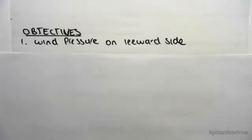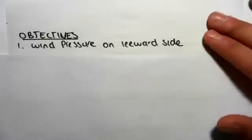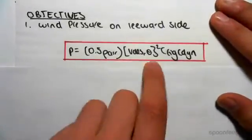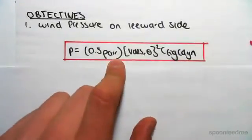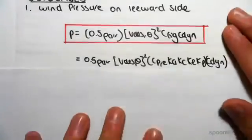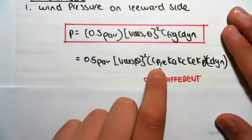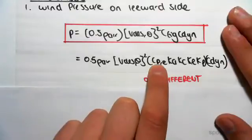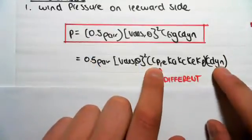Hey guys, the objective of this video is to find the wind pressure on the leeward side of our structure. The pressure formula is the exact same formula we used for the windward side. The only difference is going to be this C subscript p comma e. Every other value is the exact same except this C_p,e.